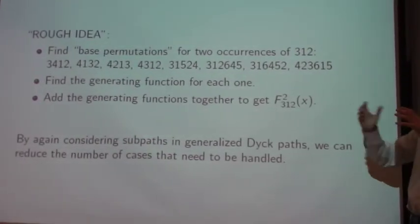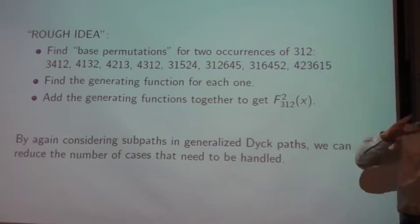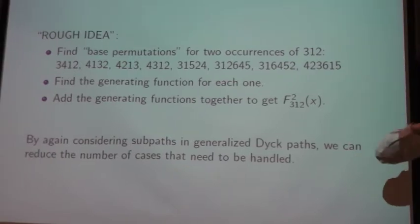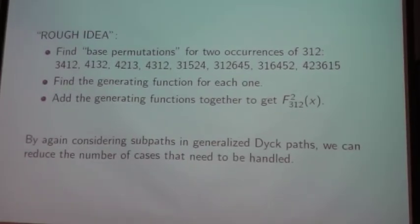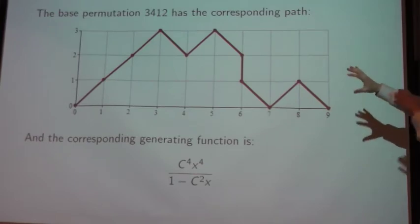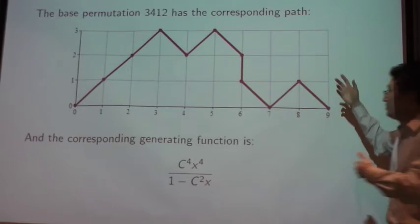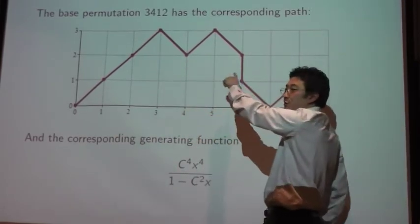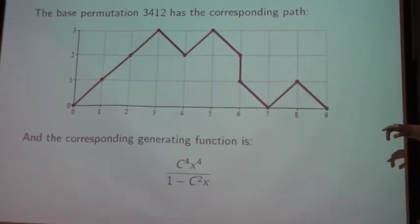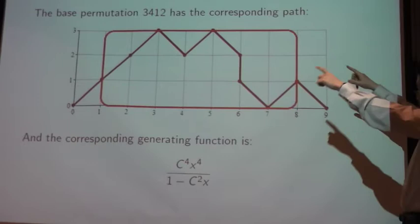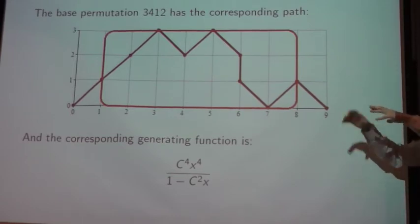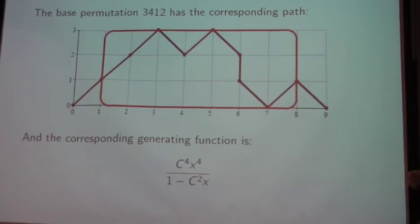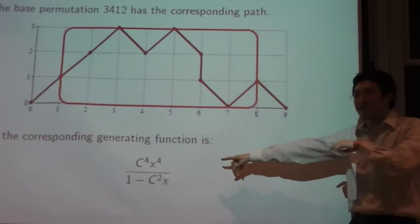Now the nice thing about this, in a sense, translating them into paths, is that by using this paths approach, there's a nice way to find the generating functions. And also it reduces down the number of cases you have to consider as well. So just to give an idea of what this looks like, for example, the base permutation 3412. So this is how, this is one way that you can have 2 copies of 312 in your permutation. You get this corresponding path here. The relevant subpath for that will be this portion in red. And then you play the same game as before, that you want to count all the generalized paths with this subpath, but also with no other down jumps anywhere else. And then by piecing together the generating function like before, then you get this expression here.